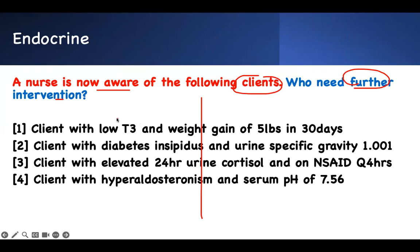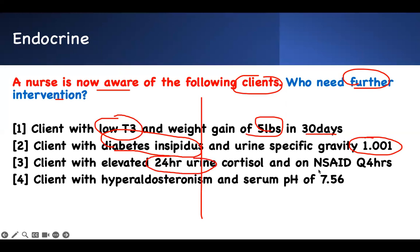The four clients are: Client A with low T3 and a weight gain of five pounds in 30 days. Client B with diabetes insipidus and a low urine specific gravity. Client C with elevated 24-hour urine cortisol on NSAIDs every four hours. Client D with hyperaldosteronism and a serum pH of 7.56.